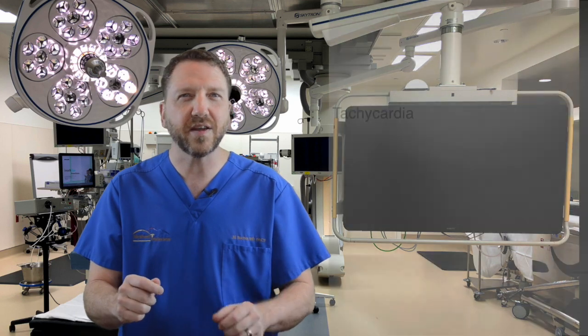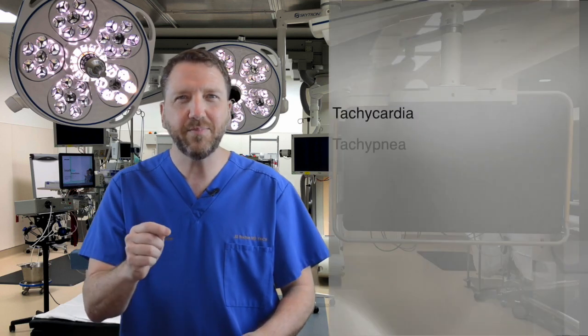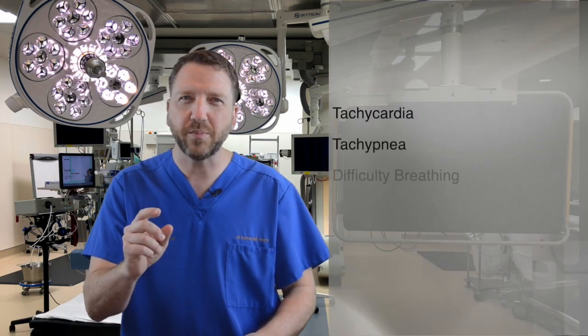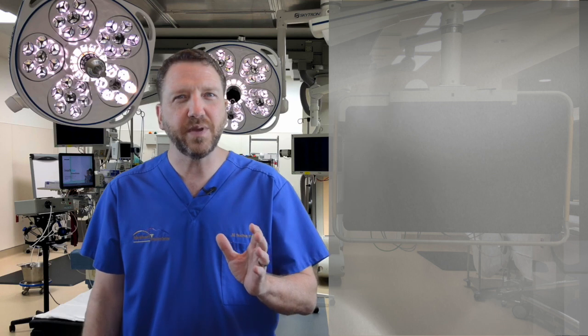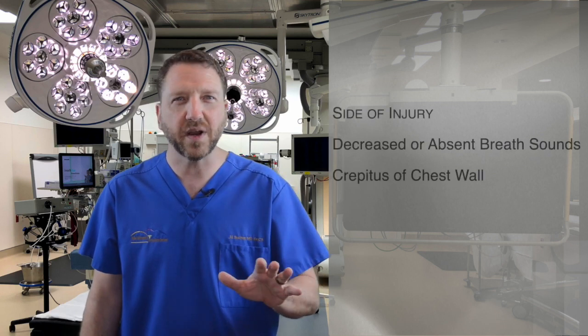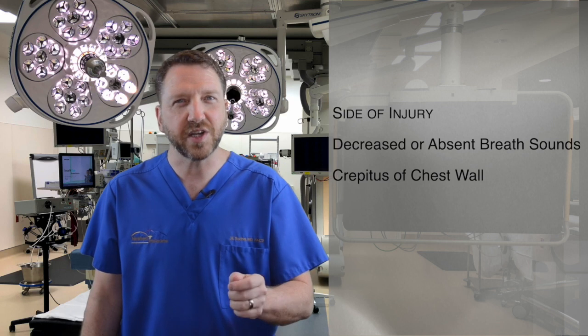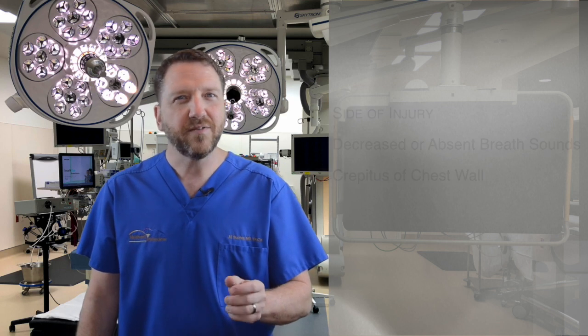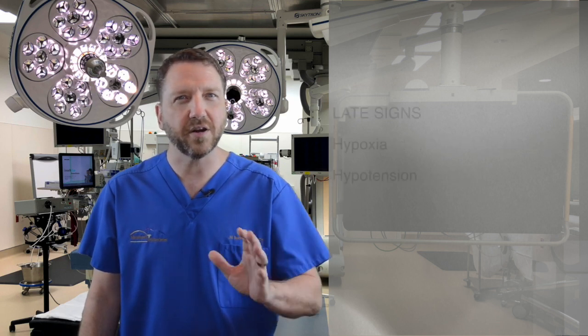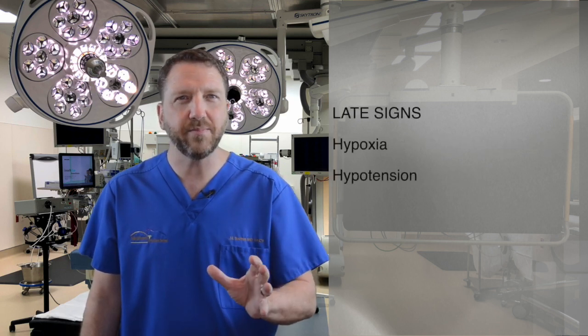Patients with tension pneumothorax appear in respiratory distress with tachycardia, tachypnea, and difficulty breathing. The site of injury should be notable for decreased or absent breath sounds, and you may be able to palpate crepitus of the chest wall. Hypoxia and hypotension are late signs that demand immediate action. Although often talked about, tracheal deviation away from the site of injury is rarely, if ever, seen in the adult.